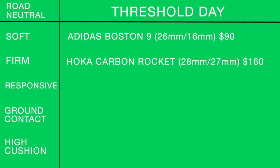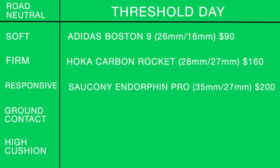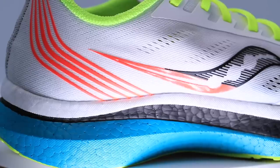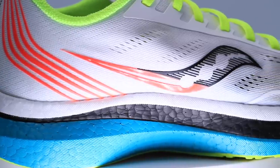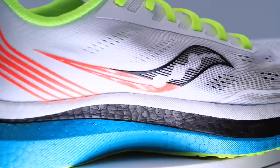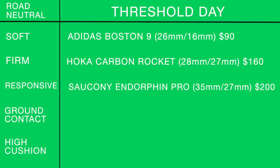For a responsive threshold shoe: the Saucony Endorphin Pro — a carbon fiber plate shoe with an 8mm drop, 35mm heel, 27mm forefoot, $200. Very responsive — I love this shoe. The resiliency of that carbon fiber plate is still there.